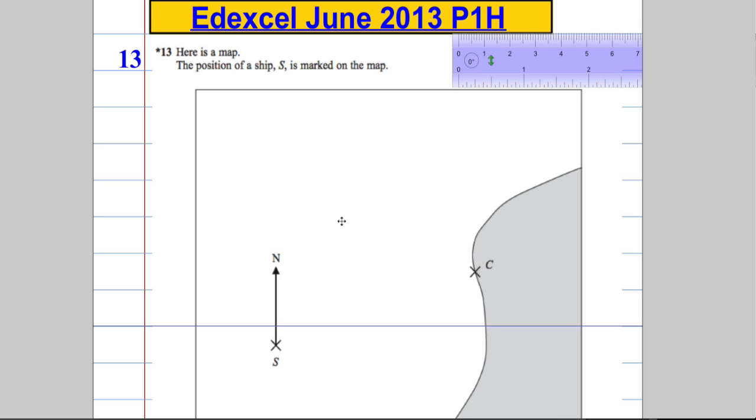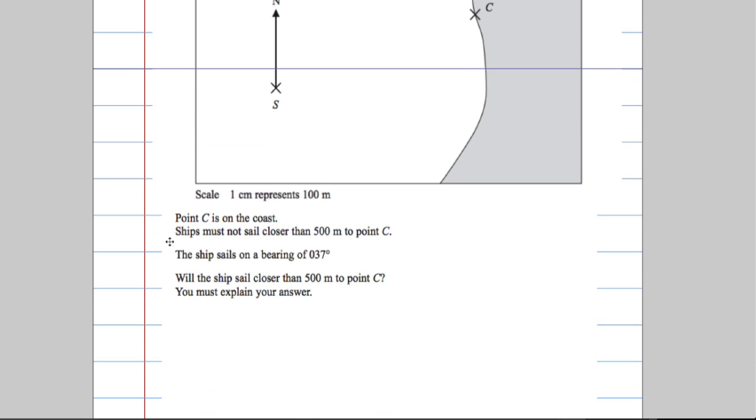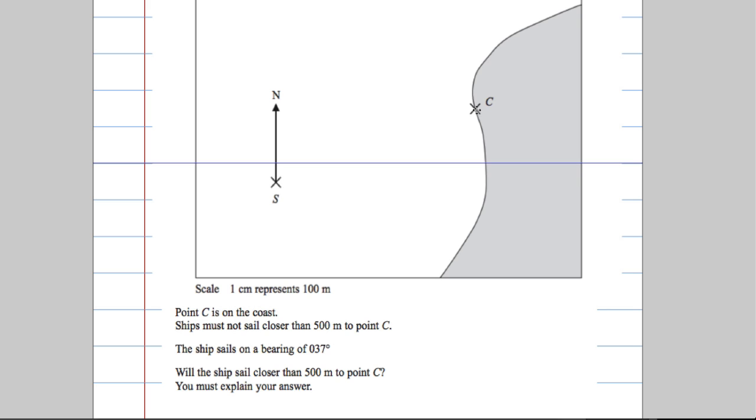But you should get the general idea of how to do the question. Right, so point C is on the coast. We got this point over here, there's the coast over there. Ships must not sail closer than 500 meters to point C. Ships sail on a bearing of 037 degrees and we're asked will the ship sail closer than 500 meters to point C.